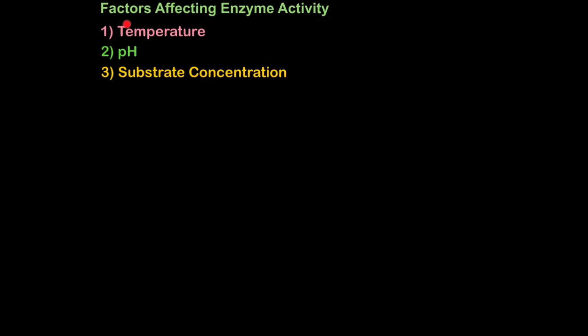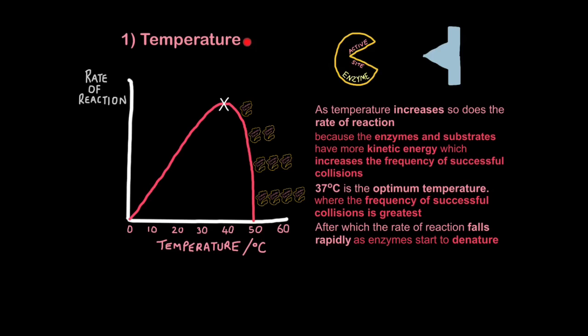Now we're going to look at the factors that affect enzyme activity. You see enzymes are very sensitive to the specific conditions within our bodies. Three factors that affect enzyme activity are temperature, pH and substrate concentration. Although you could also say enzyme concentration. You will need to be able to describe and explain different types of enzyme rate of reaction graphs. Learn them by their specific shapes.